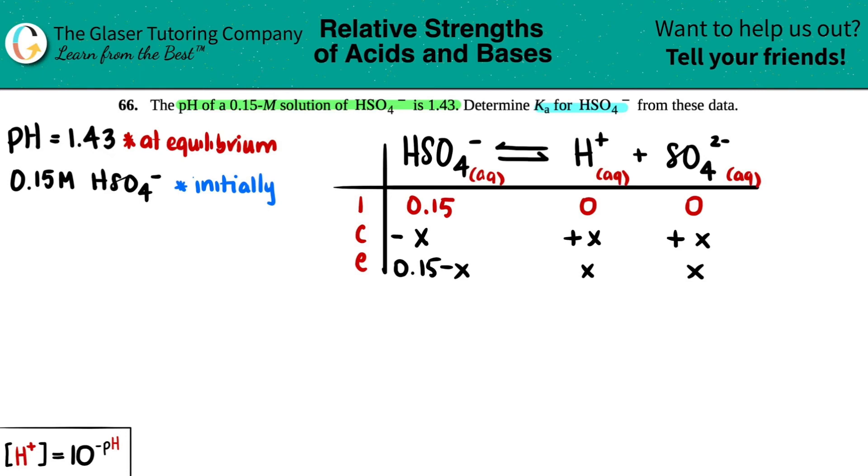We could actually get some X values. Why did they give us this pH? We know it has to do something with equilibrium. Do I know any formulas that have to do with pH? This one. If I want to find that H+ concentration, the hydronium, which is here, all I have to do is 10 to the negative pH. That's at equilibrium.